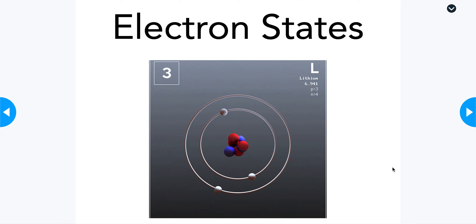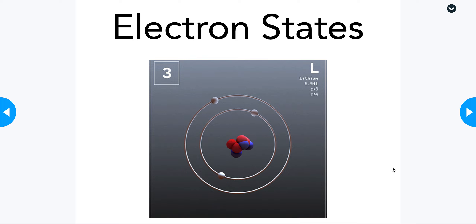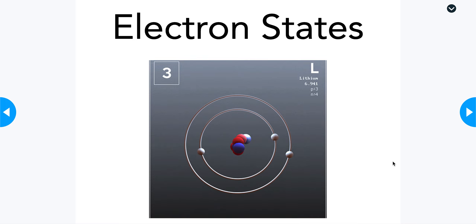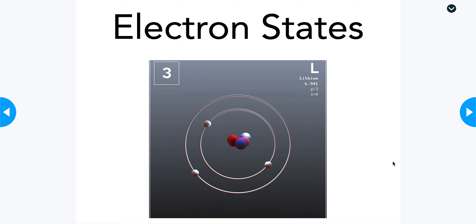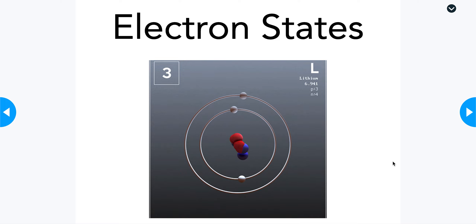Today we are going to be talking about electron states. In this animation, you can see an example of an animated Bohr model of lithium. What we are looking at is lithium in its ground state, and we'll talk about what that means in just a moment.